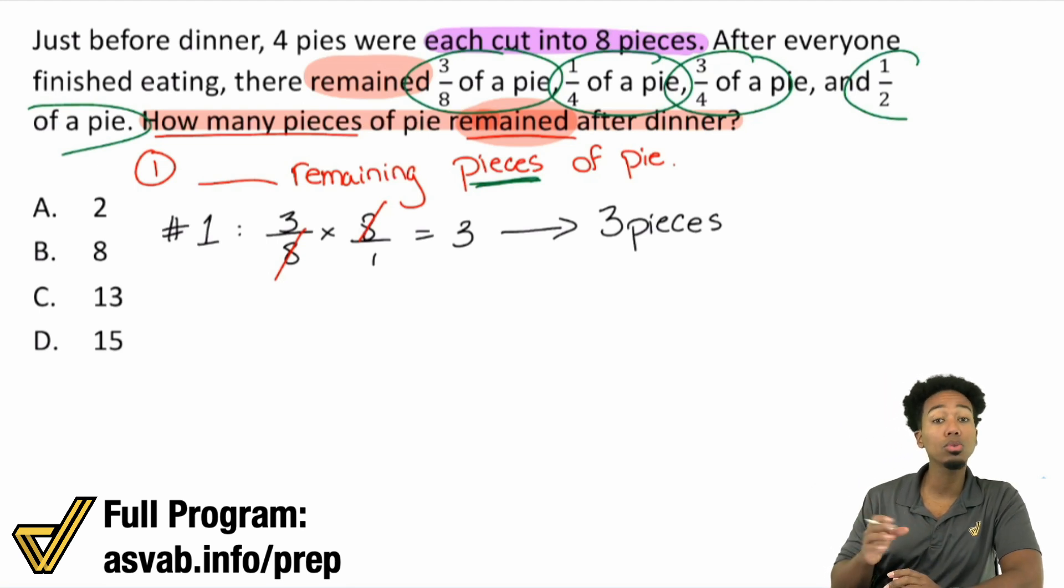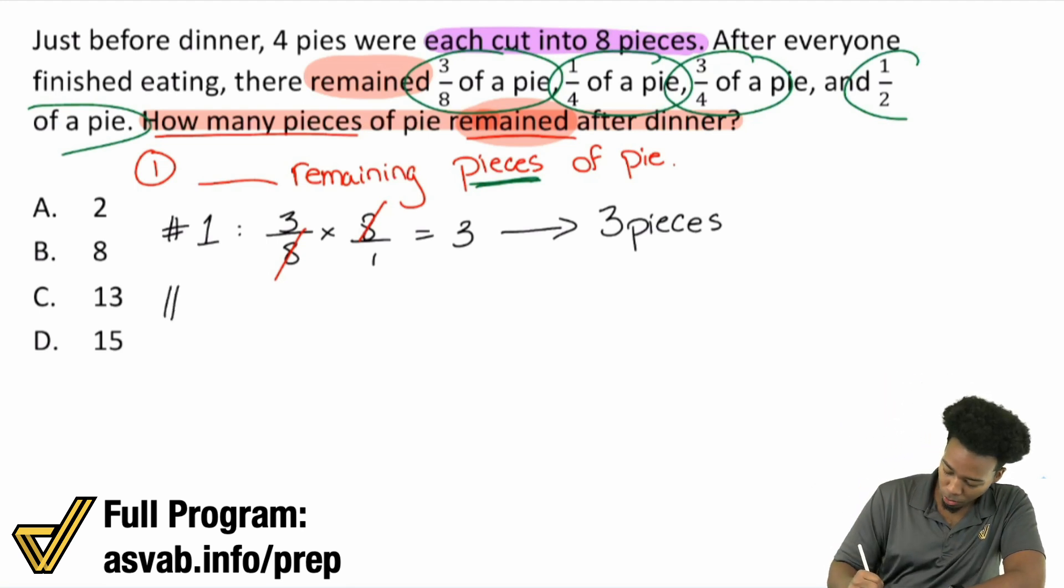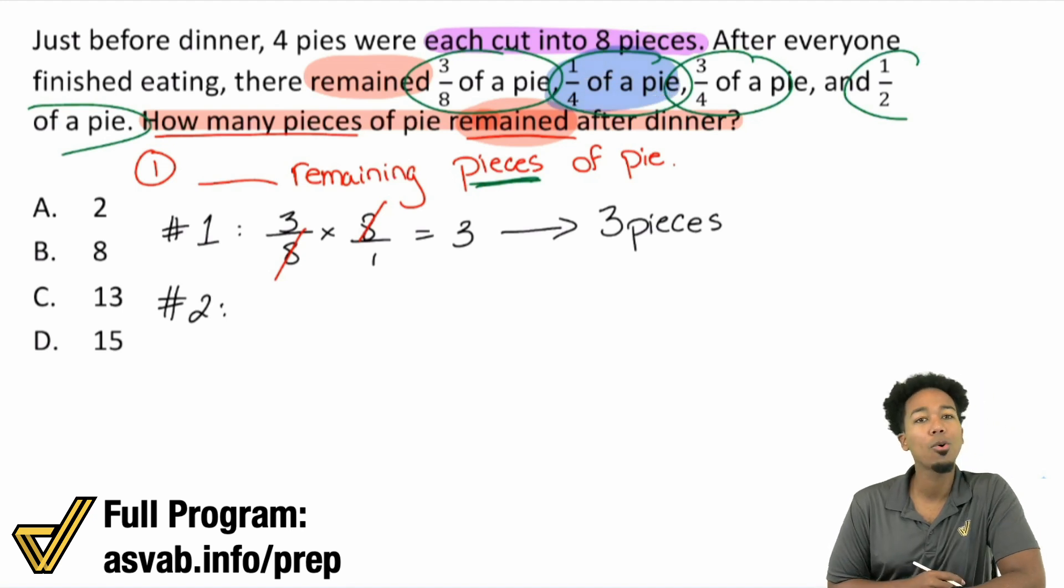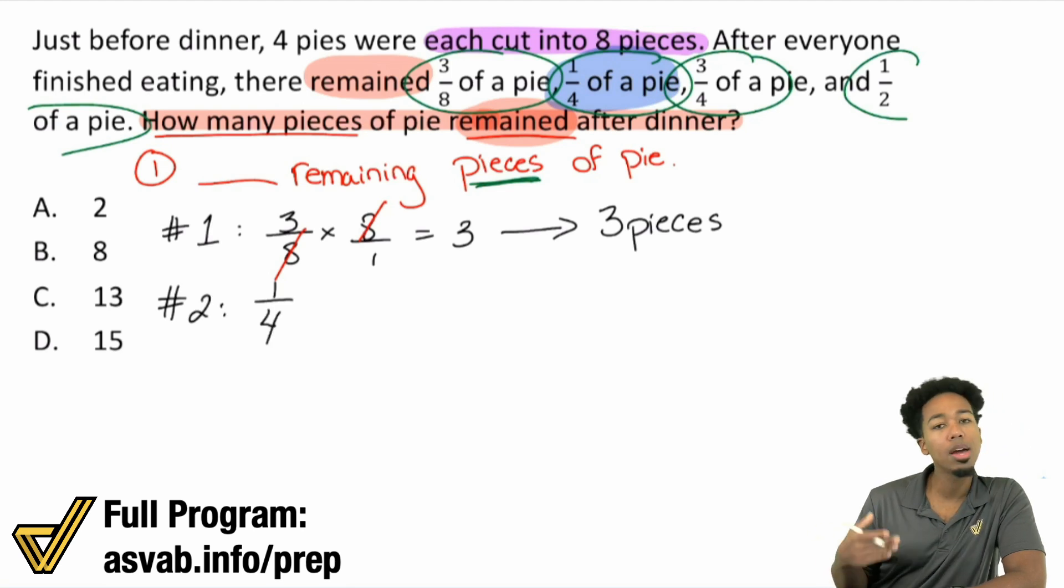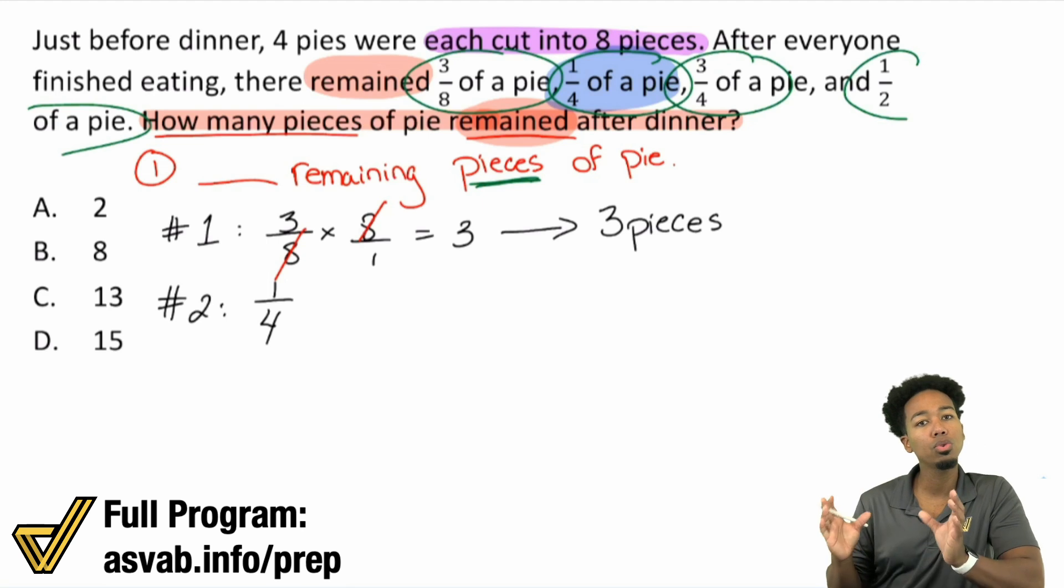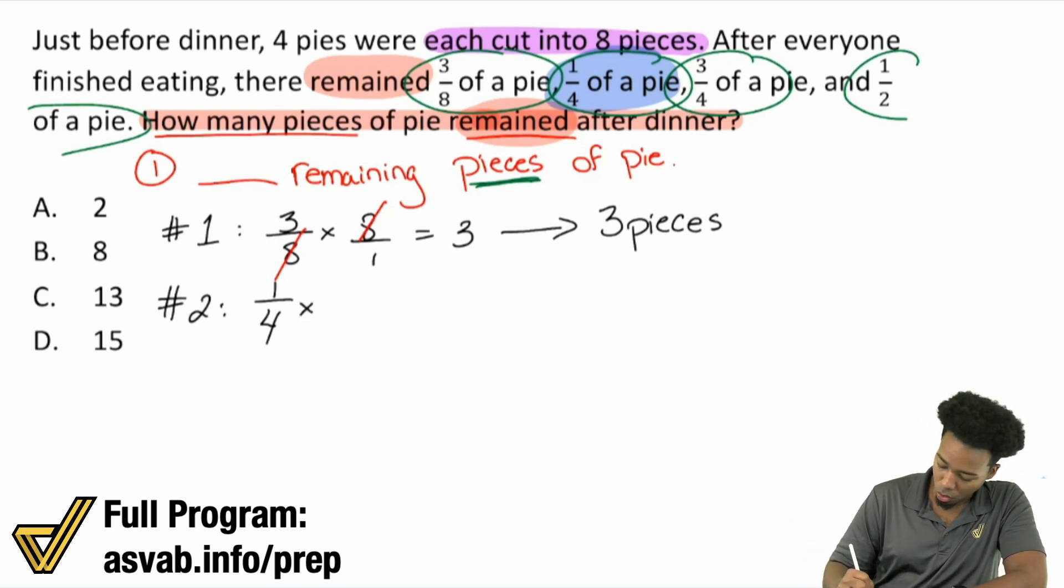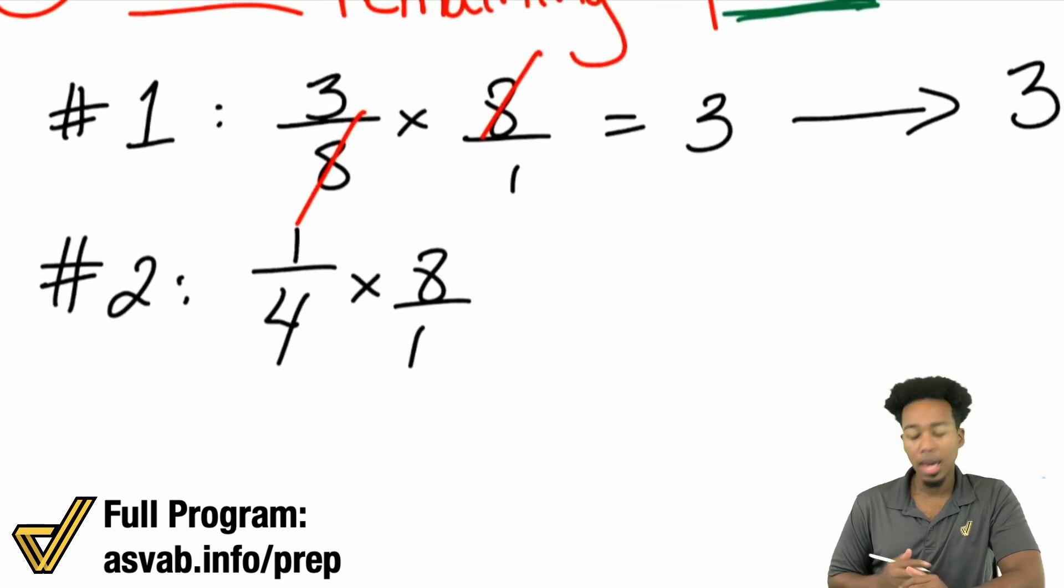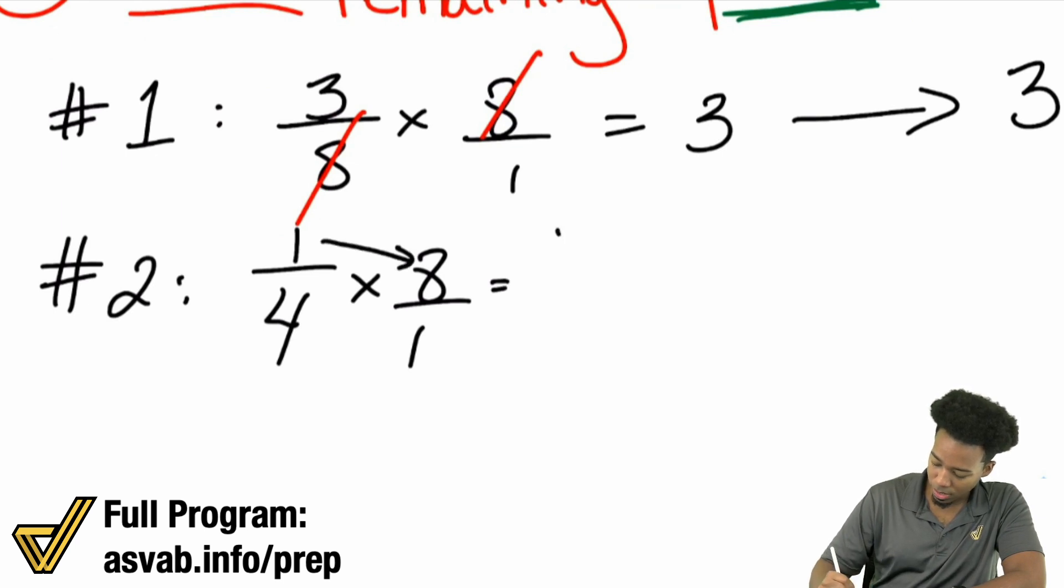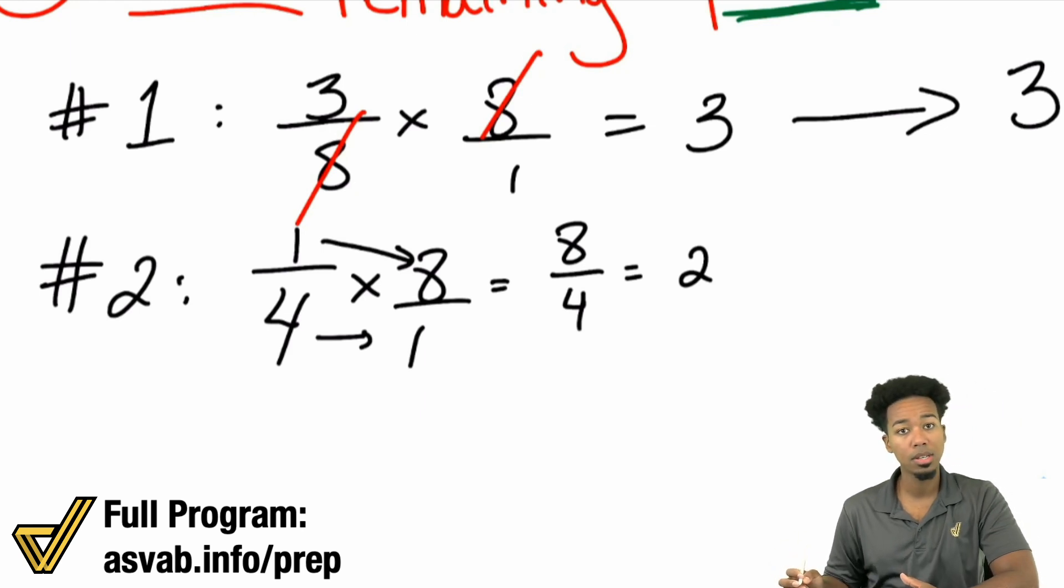So there are two ways that you can figure out how many pieces are left from each pie. Let's go ahead and look at number 2, pie number 2, to really show you exactly what I mean. Pie number 2, we have a quarter of a pie. If we have one quarter of a pie, remember, every pie was 8 pieces. So there are two real ways we can do this. One, we can just do a quarter times 8, which is the same thing as saying 8 over 1. That's just going to be the same thing as 1 times 8, 4 times 1, 8 over 4 is 2. So that's going to be two pieces.